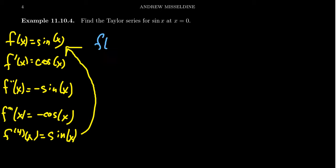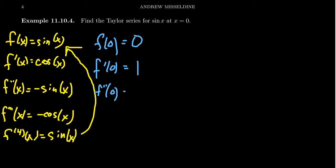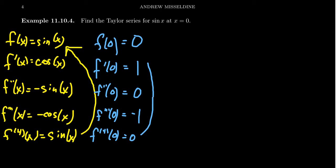Now if we start plugging in x equals 0 for our center: f of 0 is sine of 0, which is 0. Then f prime of 0 is cosine of 0, which is 1. The second derivative at 0 is negative sine of 0, which is still 0. The third derivative at 0 is negative cosine of 0 — cosine of 0 is 1 — so you get negative 1. The fourth derivative at 0 gives back 0, and the cyclic nature just repeats itself.